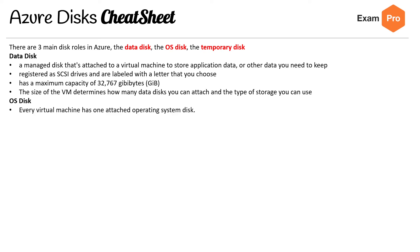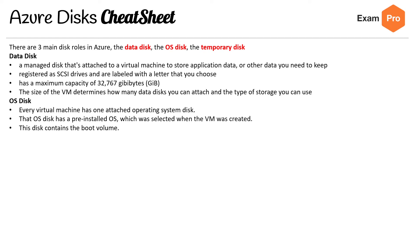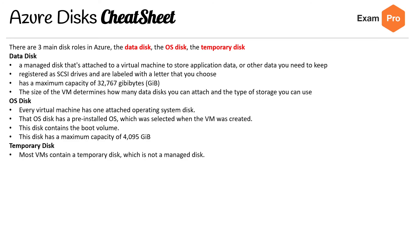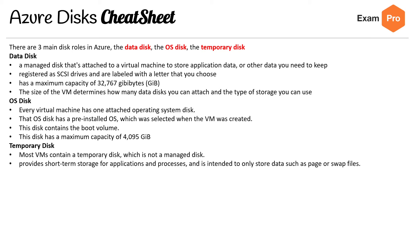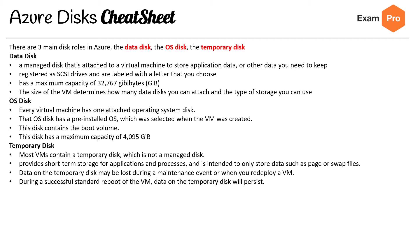For the OS disk, every virtual machine has one attached operating system disk. The OS disk has a preinstalled OS which was selected when the VM was created. The disk contains the boot volume and has a maximum capacity of four gigabytes. For temporary disks, most VMs contain a temporary disk, which is not a managed disk. It provides short-term storage of applications and processes, intended to only store data such as page or swap files. Data on the temporary disk may be lost during a maintenance event or when you deploy a VM. During a successful standard reboot of the VM, data on the temporary disk will persist.